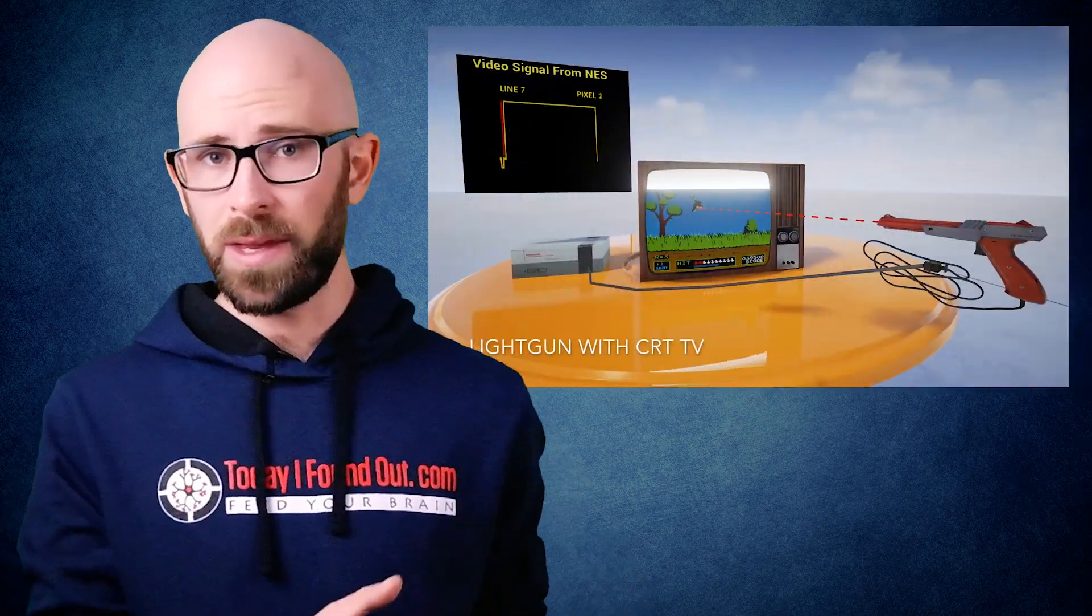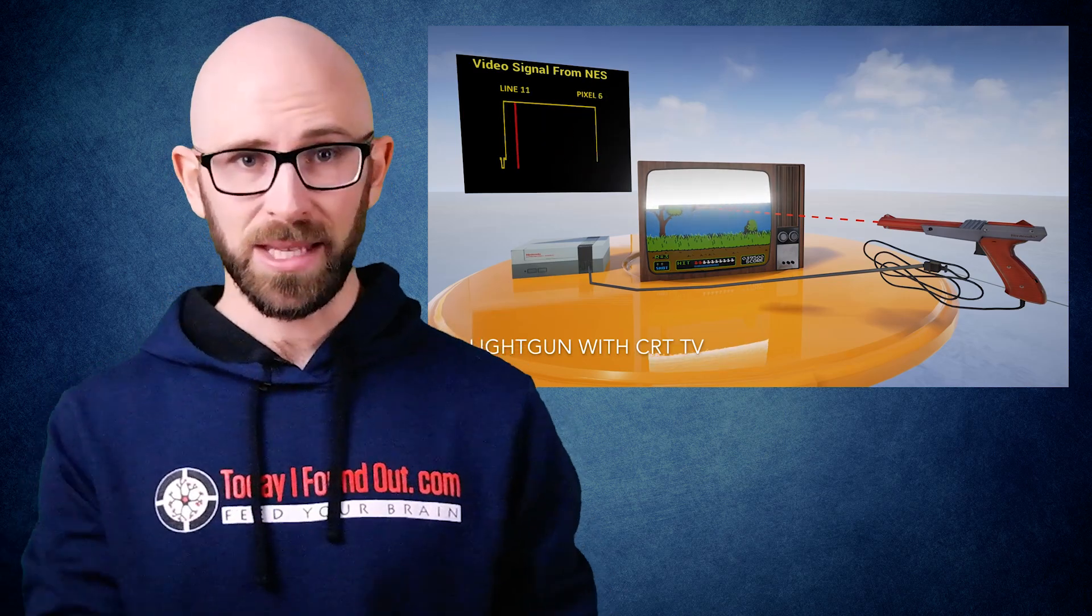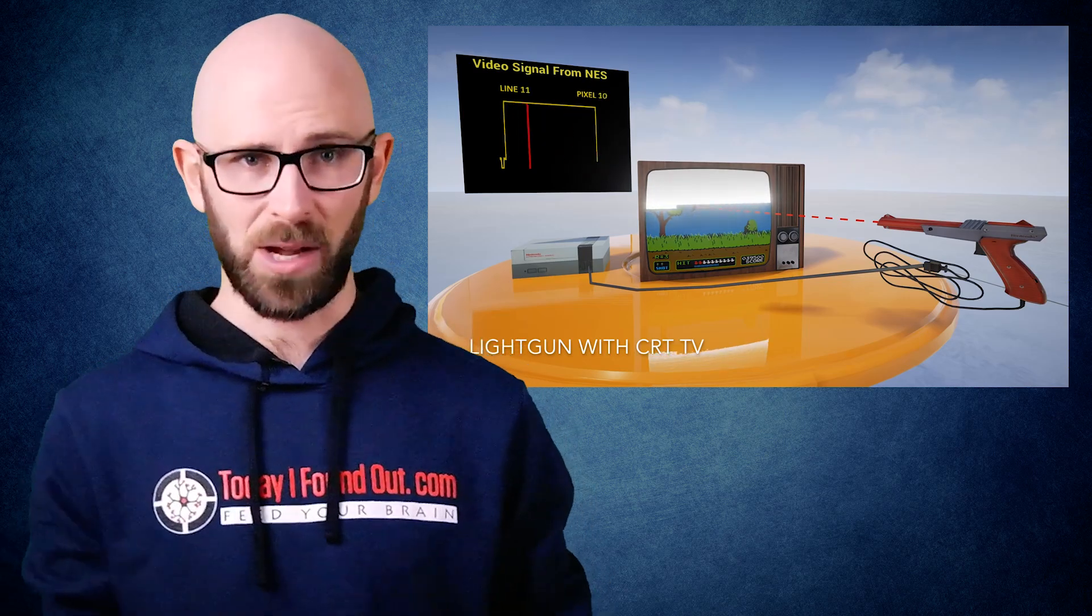However, that's not actually what they did in the NES system. Rather, they used multiple frames, one per target, as described previously. In a one-frame system, it uses a signal from the TV itself.